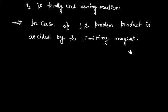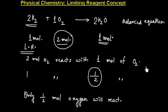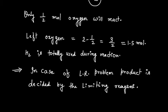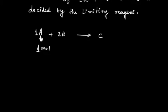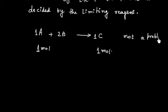How do we know if a problem is a limiting reagent problem? Very simple — if we have been given more than one reactant, then this is a limiting reagent problem. For example, if I have A + 2B → C and only 1 mole of A is given, that is a direct problem — not a limiting reagent problem.